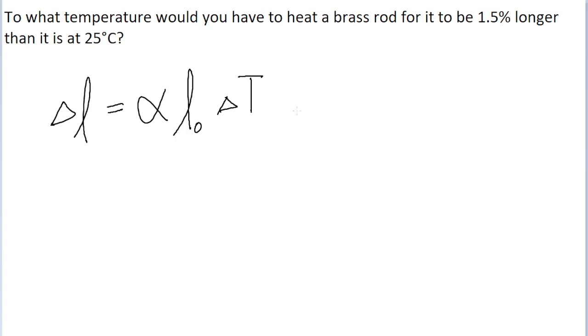This problem is asking us to find some final temperature that's required, so as far as this equation is concerned, the most relevant thing we want to find is the change in temperature. We want to find the change in temperature from the initial temperature and then add them together. So we're going to algebraically rewrite this equation to solve for delta T, and we can do that by dividing both sides of the equation by alpha L0 to get delta T on its own. So we find that the change in temperature is equal to the change in length, delta L, divided by alpha L0.